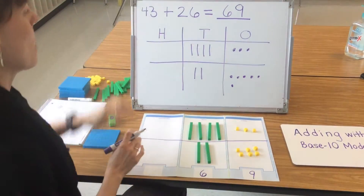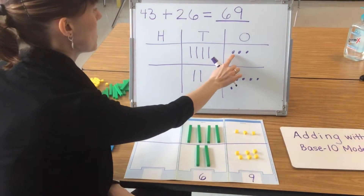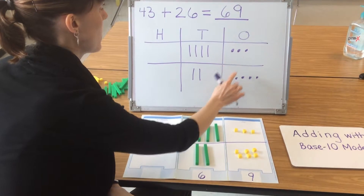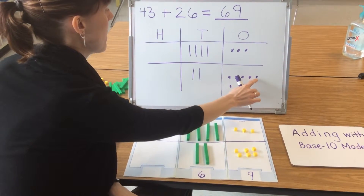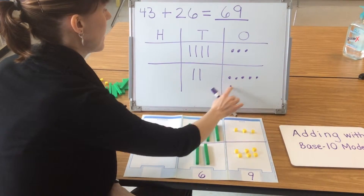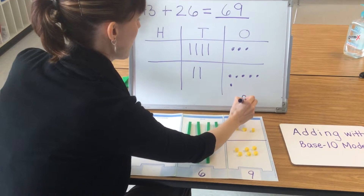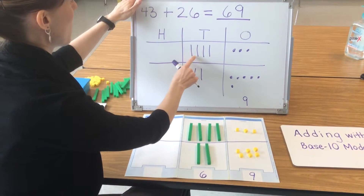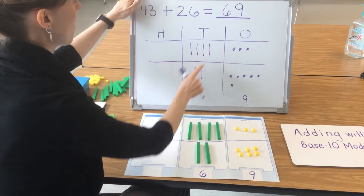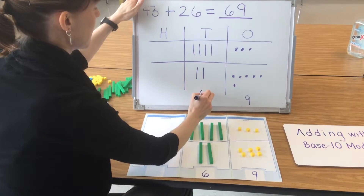When I'm ready to count, I will start in my 1s: 1, 2, 3, 4, 5, 6, 7, 8, 9. Write a 9 in the 1s place and I count my 10s: 1, 2, 3, 4, 5, 6 tens.